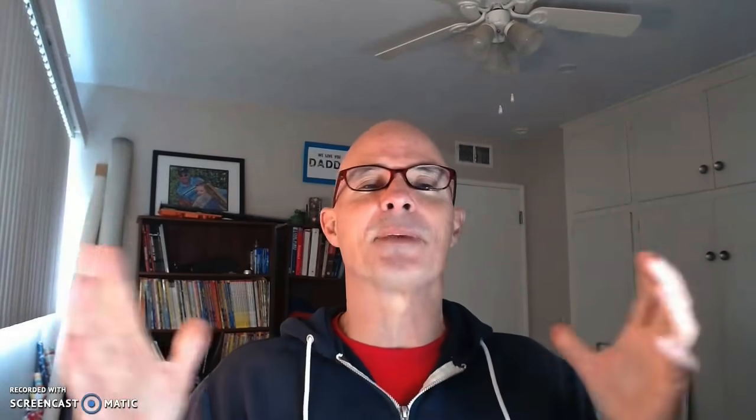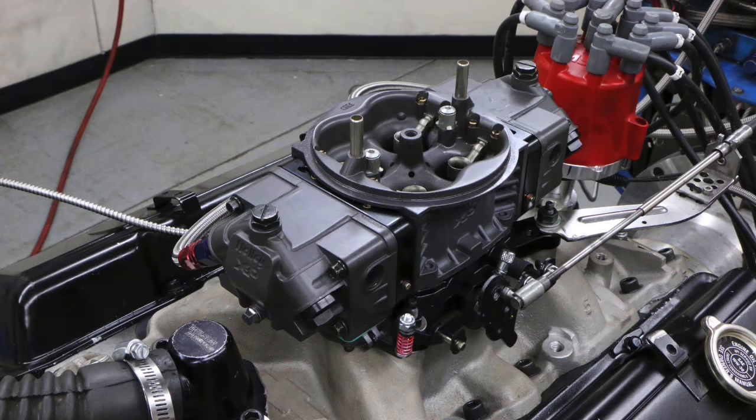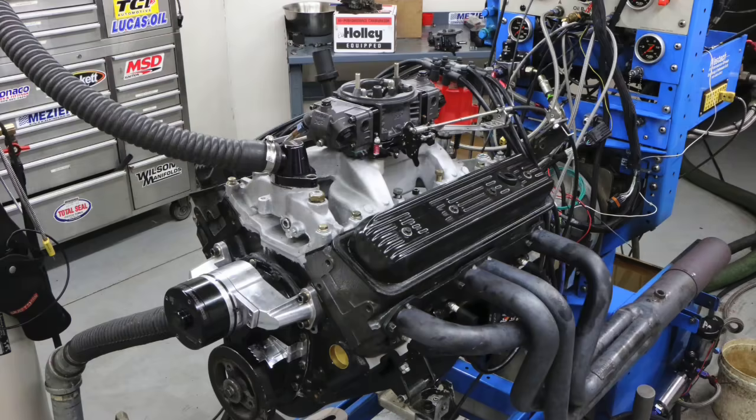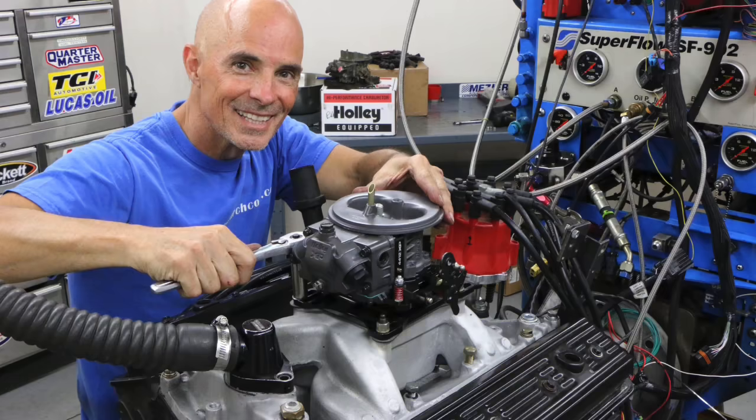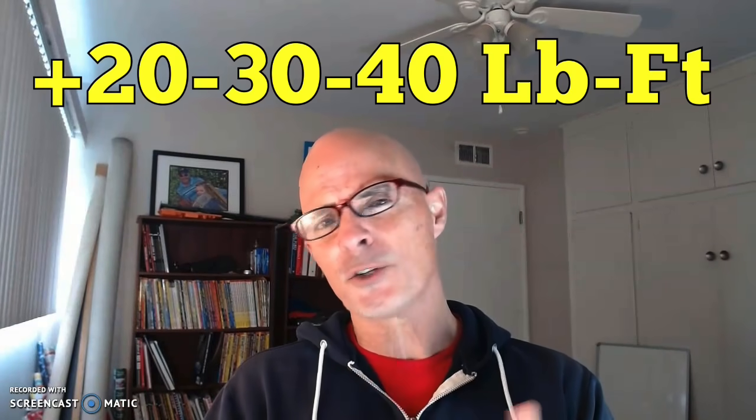Later on I'm going to change the title because I want people searching for the Holly two barrels and the Holly four barrels and headers. But here's the question for today: how much power is it worth going from a two barrel to a four barrel carburetor, and can you really get 20, 30, even 40 foot pounds of torque from headers? Let's find out.